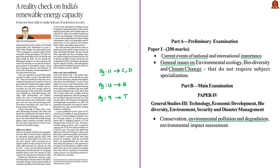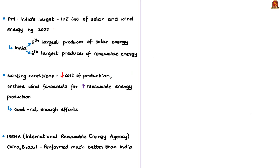This editorial speaks about India's ambitious targets of renewable energy and the lack of government efforts to tap favorable conditions for increasing renewable energy production in India. The author tells that the expansion of renewable energy capacity in India is a step in the right direction. In the first part of the editorial, the author mentions some statistics told by the Prime Minister of India when he addressed the plenary session of the World Environmental Day celebrations on 5th of June 2018. The Prime Minister stated that India has engaged in a massive push towards renewable energy generation.